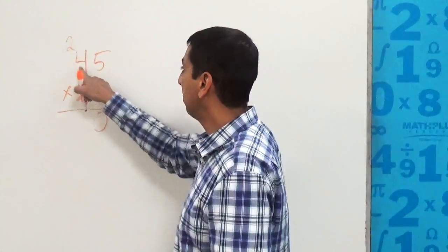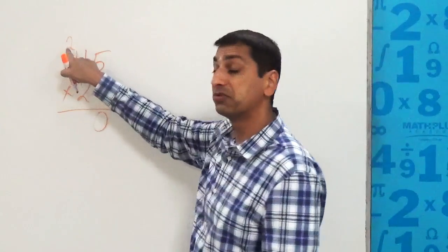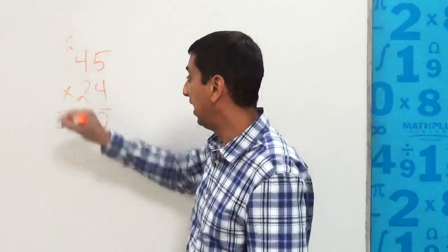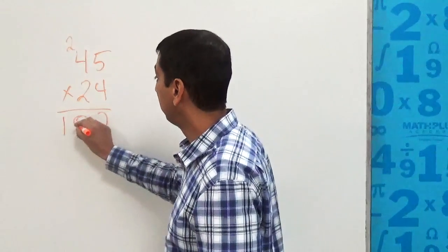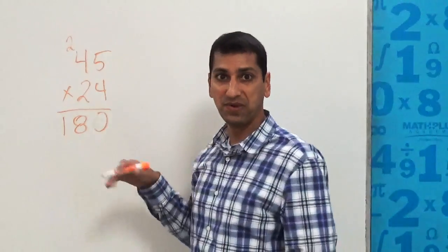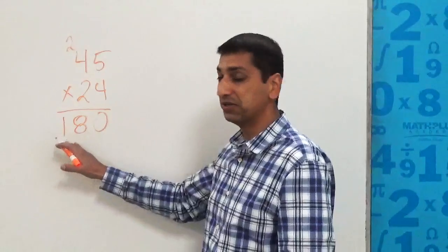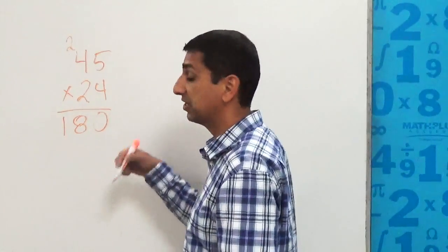Then we do four times four, which is 16. We have to remember to add in the two, which is 18, and we place that there. Again, we haven't really told anyone exactly why we're doing that, but that's how you execute the procedure.